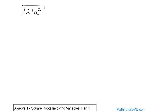Let's first tackle the number part. What is 121? What times what gives you 121? That's going to be 11 times 11. Then you ask yourself, what times what gives you a²? Everything is multiplied here, so a² is going to be a times a.